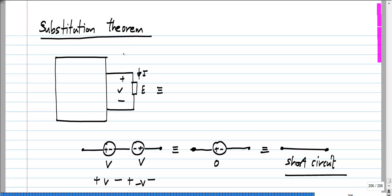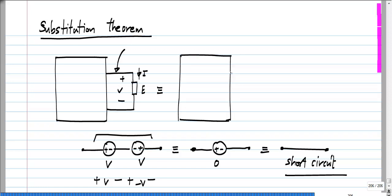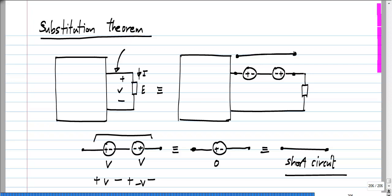So this will be exactly equivalent — let me replace this wire with my fancy short circuit. Remember, between those two points it is just equivalent to a wire. So this whole circuit is exactly equivalent to what we had earlier, with element E carrying a current I and having a voltage V across it. This itself is V and this is also V with the other polarity.